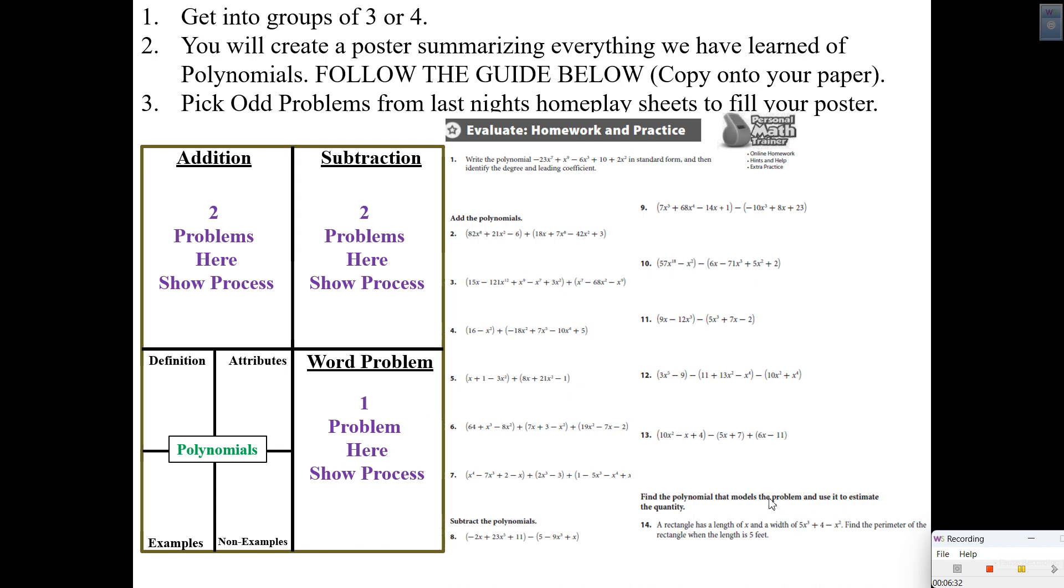Whoever's doing subtraction, you're going to pick from number nine, 11, or 13, which has subtraction. Whoever's doing the word problem, make sure you do one that looks similar to this one. And those of you that are doing the frayer model, you ought to do that from your brain, not your notes.